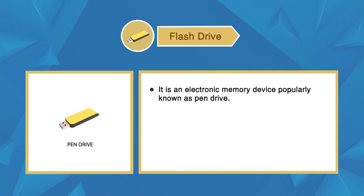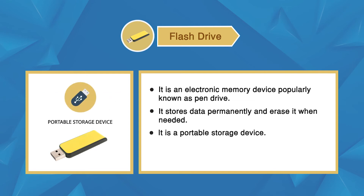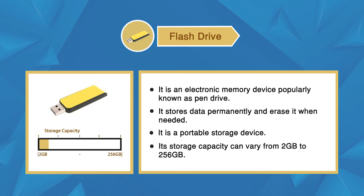Flash drive is an electronic memory device, popularly known as a pen drive. It stores data permanently and can be erased when needed. It is a portable storage device. Its storage capacity ranges from 2 GB to 256 GB.